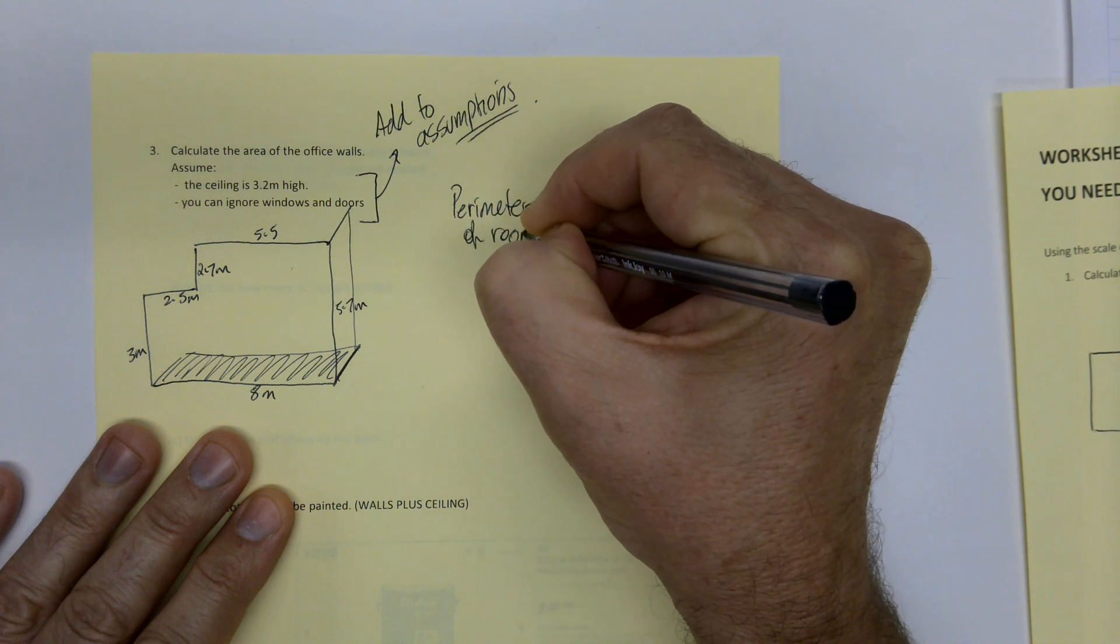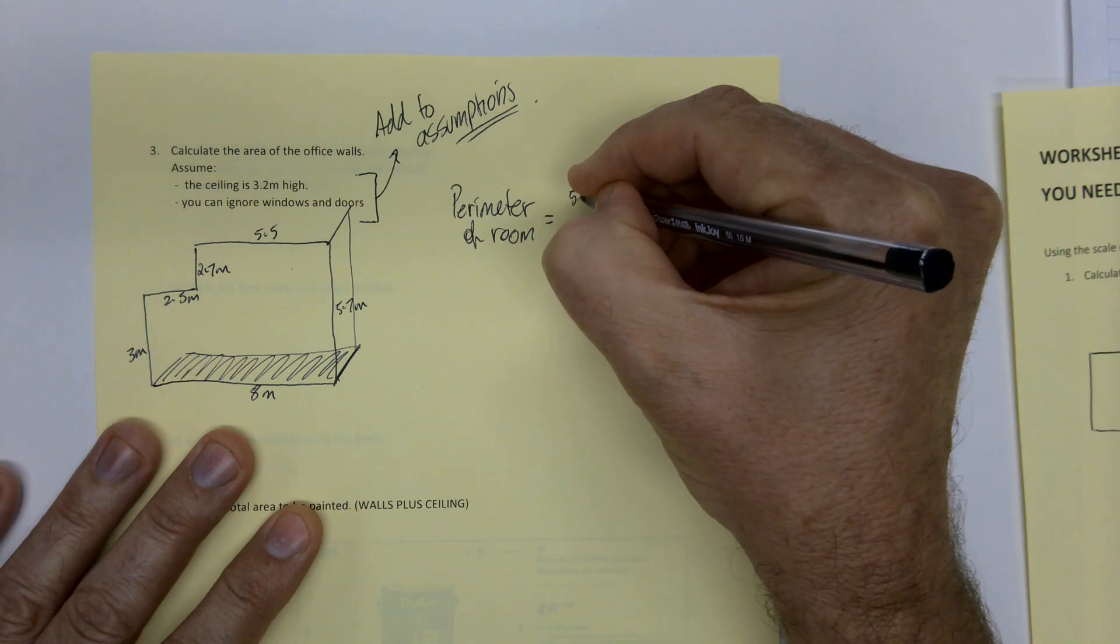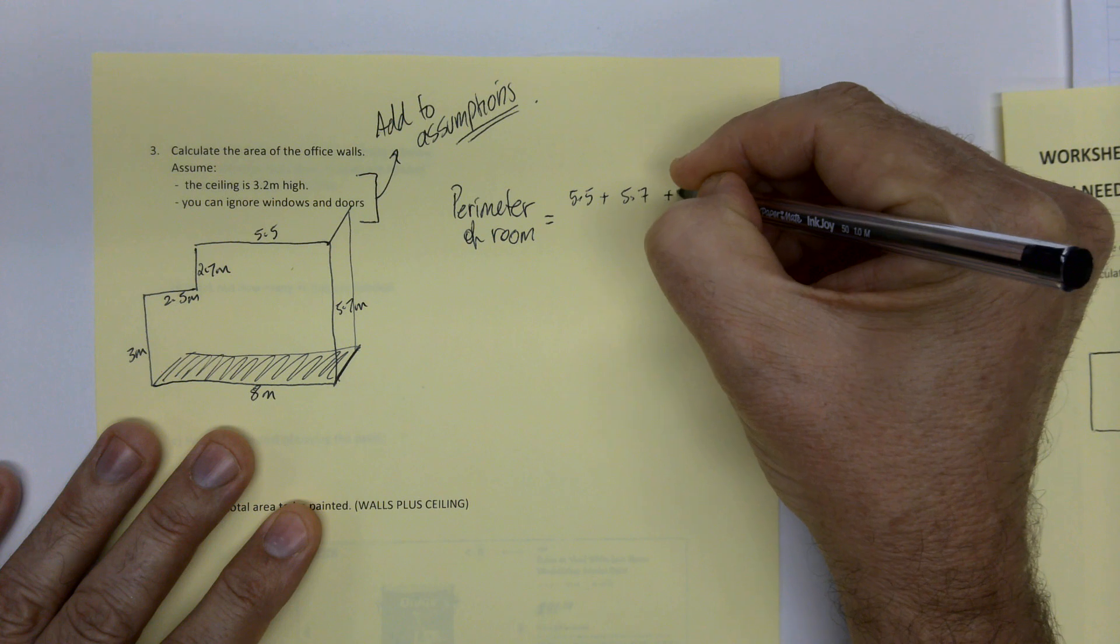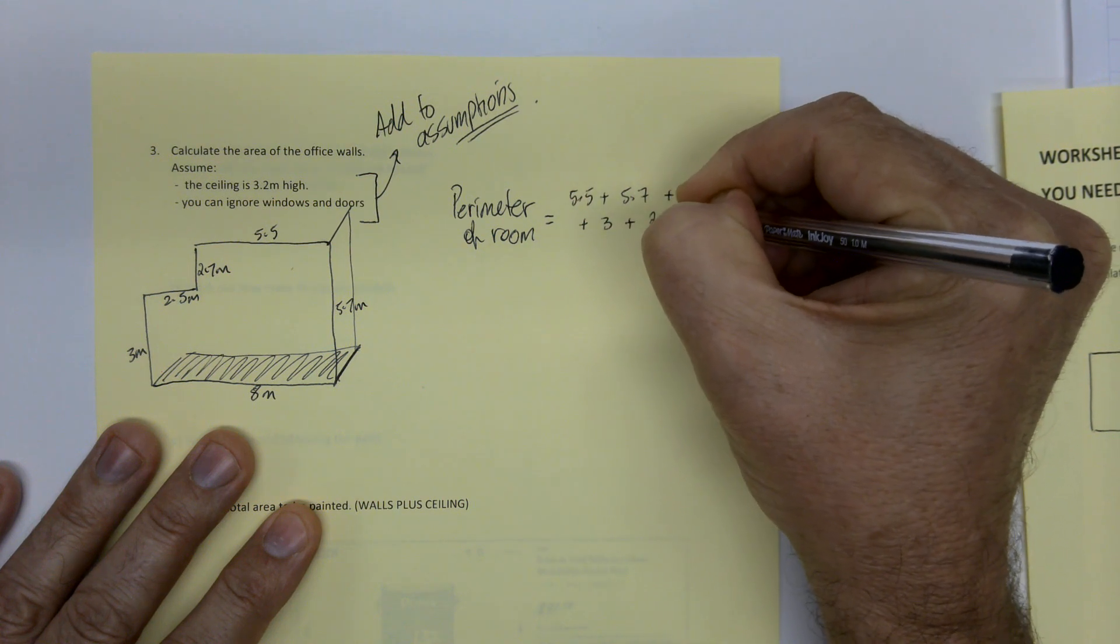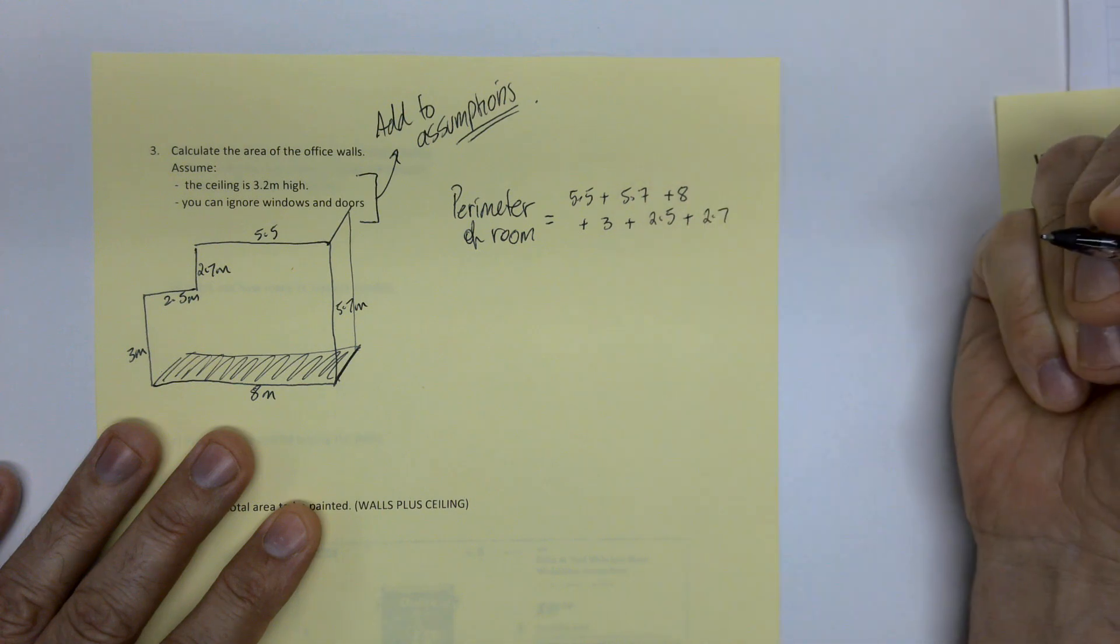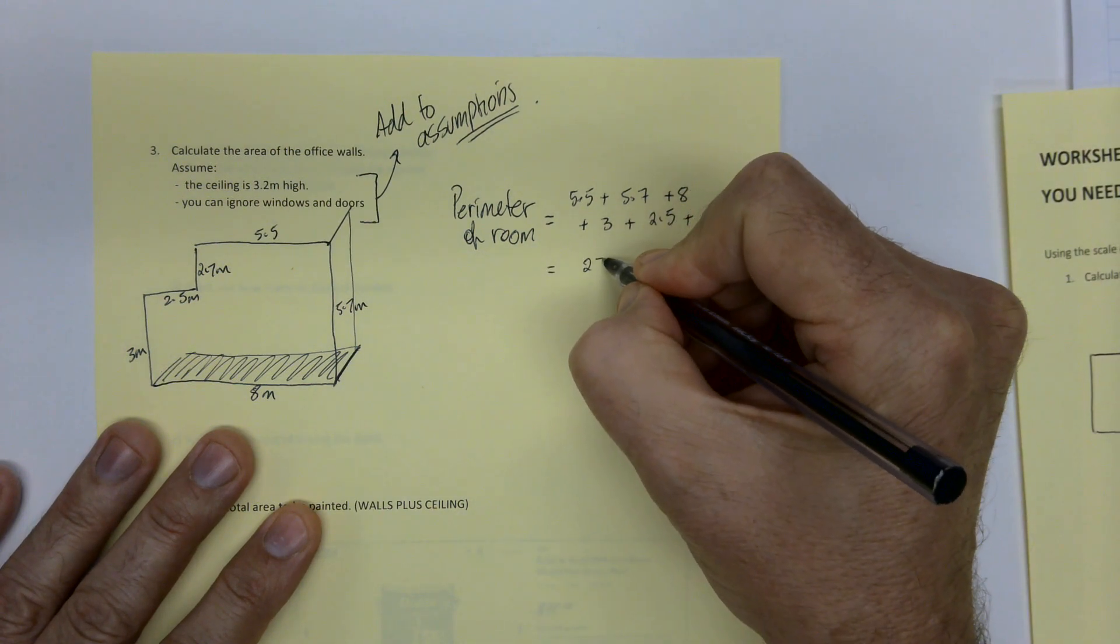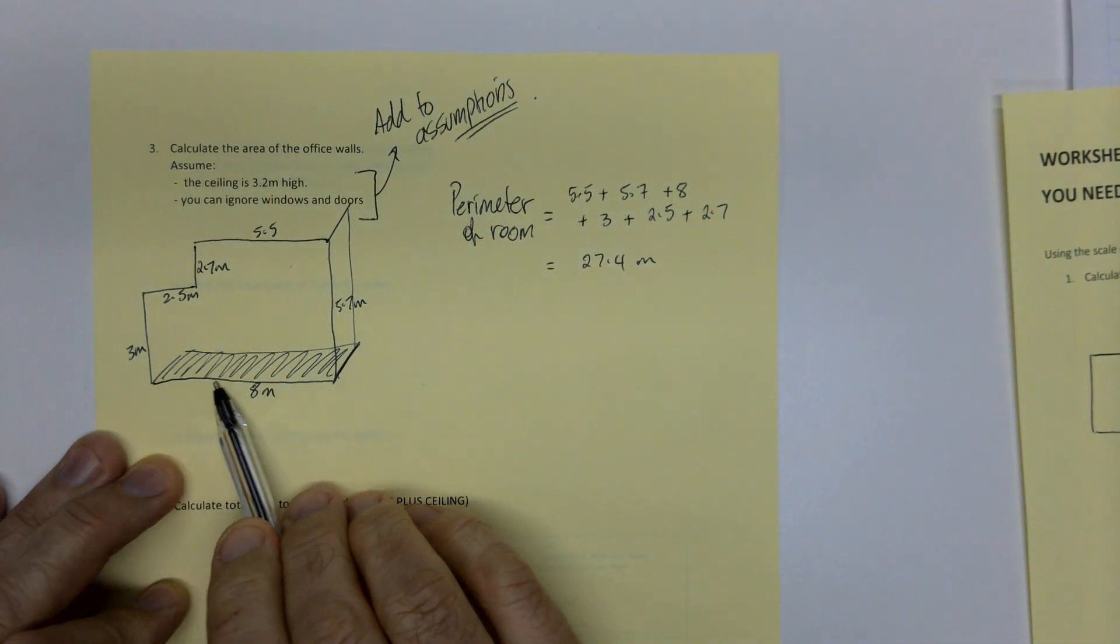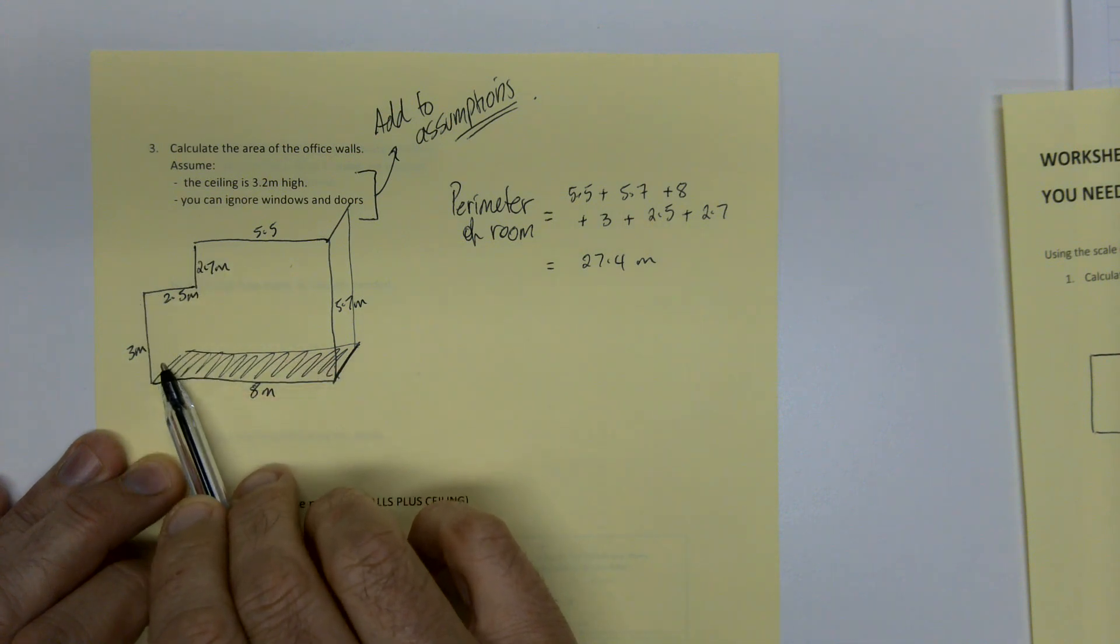So the perimeter of the room is all these things added up. So we've got 5.5 plus 5.7 plus 8 plus 3 plus 2.5 plus 2.7. And if you do the number crunching there, that's 27.4 meters. Stop and think. That is essentially if you walked around the edge of the room, that is how far you would have walked.